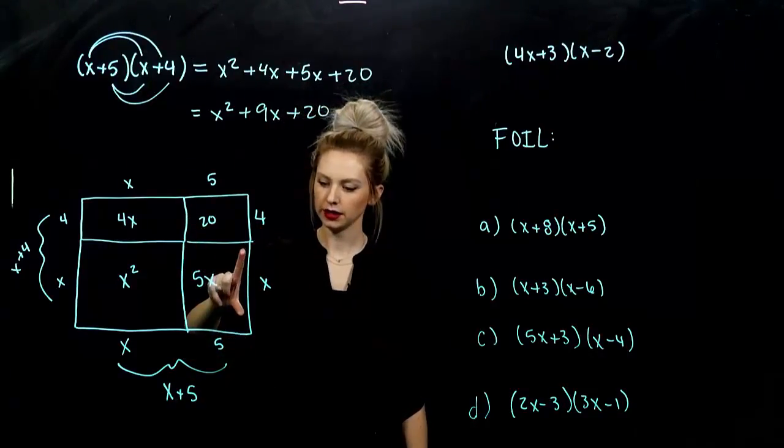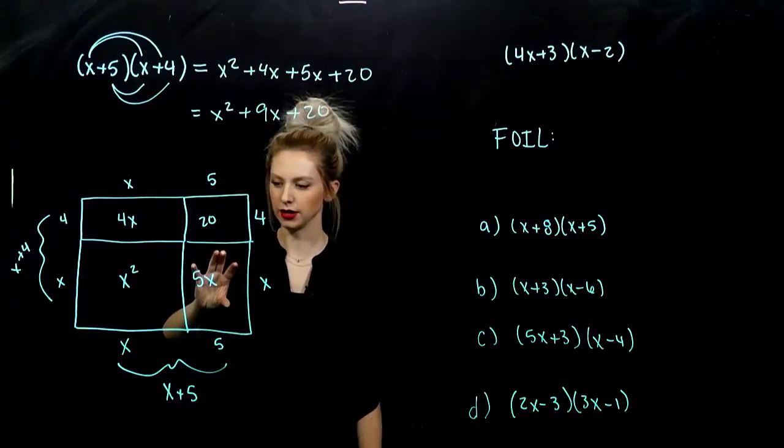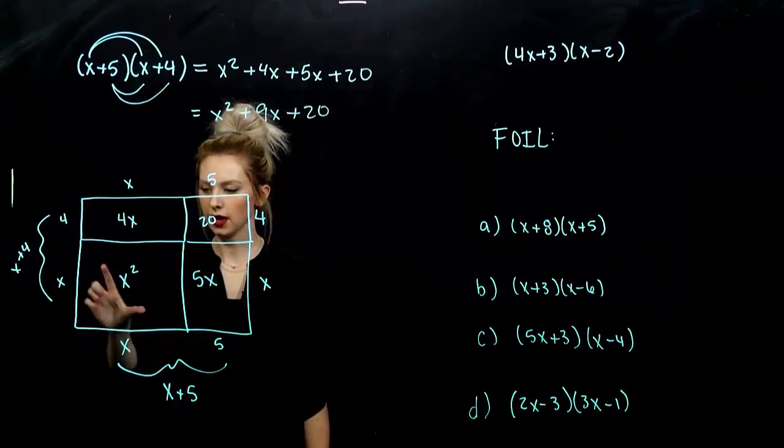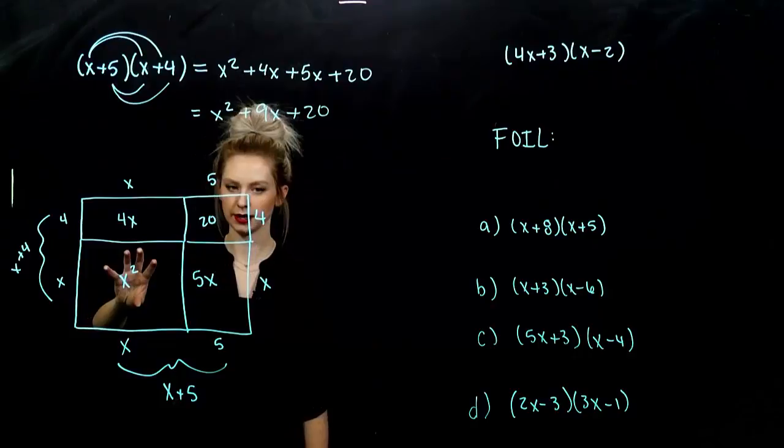Width down here is 5, length is x. So, 5x is the area of that one. Length x, length x, area of this square is x squared.